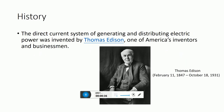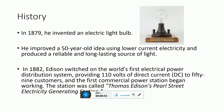According to Wikipedia, the direct current system of generating and distributing electric power was invented by Thomas Edison, one of America's inventors and businessmen. In 1879, he invented an electric light bulb. He improved a 50-year-old idea using lower current electricity and produced a reliable and long-lasting source of light. In 1882, Edison switched on the world's first electrical power distribution system.